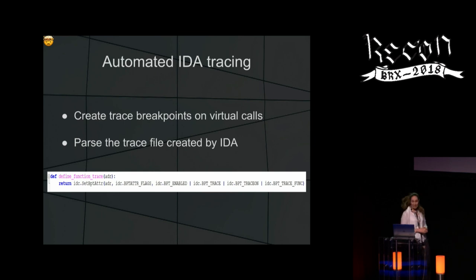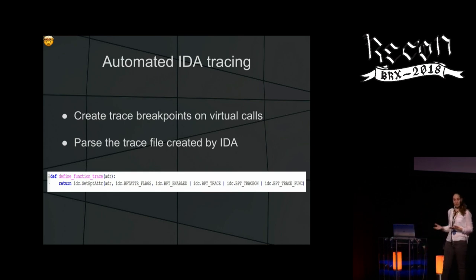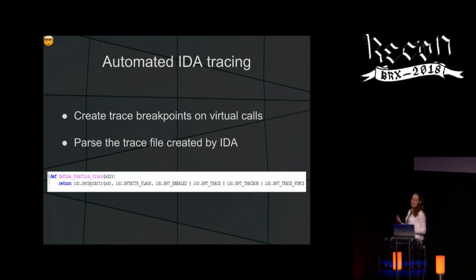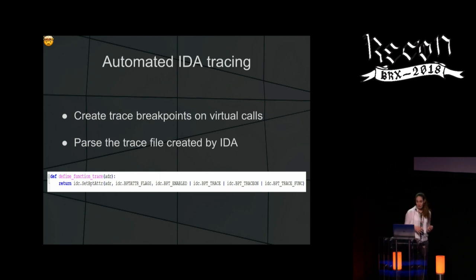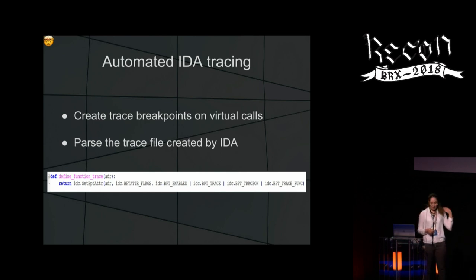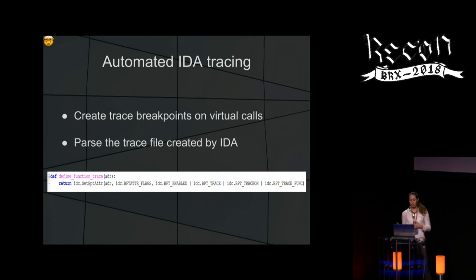Since IDA already provides tracing, I thought I could use it and automate the process. So I created trace breakpoints on the virtual calls and parsed the trace file that IDA provides. This line of code in IDA Python shows the option to change some flags on a breakpoint to turn it into a trace breakpoint.